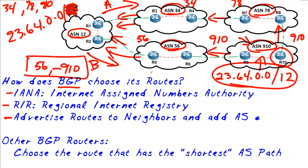The primary decision-making in BGP for which path to use is by looking at the length of the AS path. Path A has a length of three and path B has a length of two, so BGP is going to choose the path with the lowest number of autonomous systems in the AS path list. That's it.